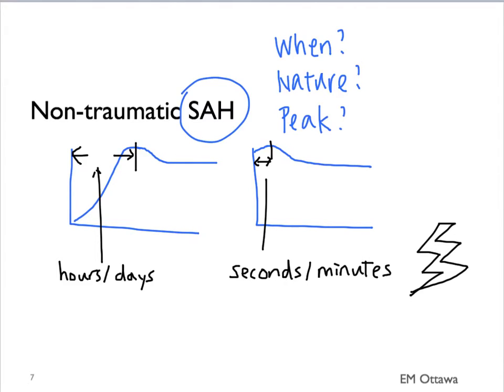After getting the history of the onset of the headache, we need to know whether there is a history of similar headaches and what workup has been done. We also want to know about family history of subarachnoid bleeds, aneurysms, and polycystic kidney disease.